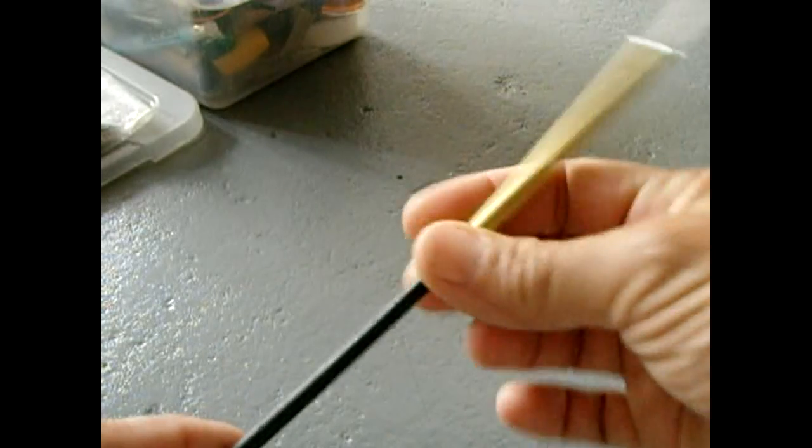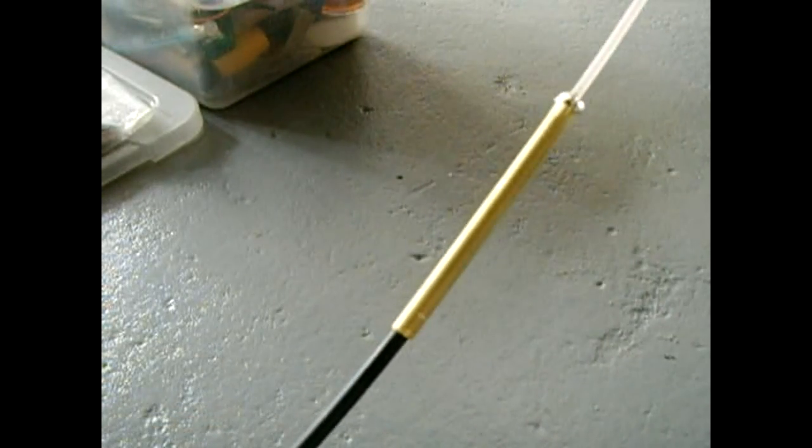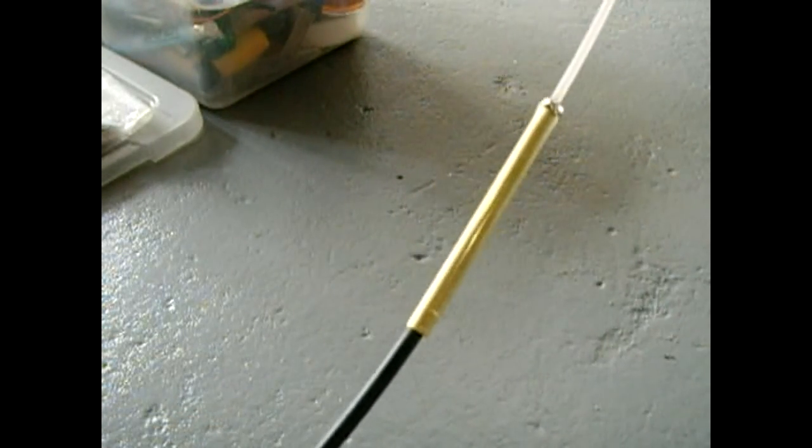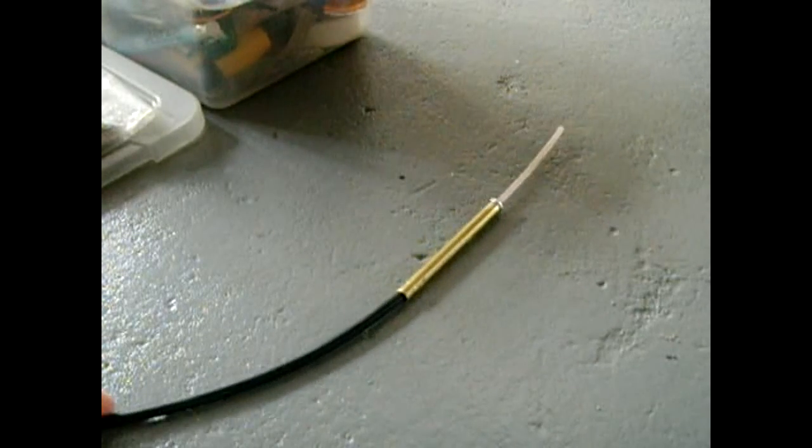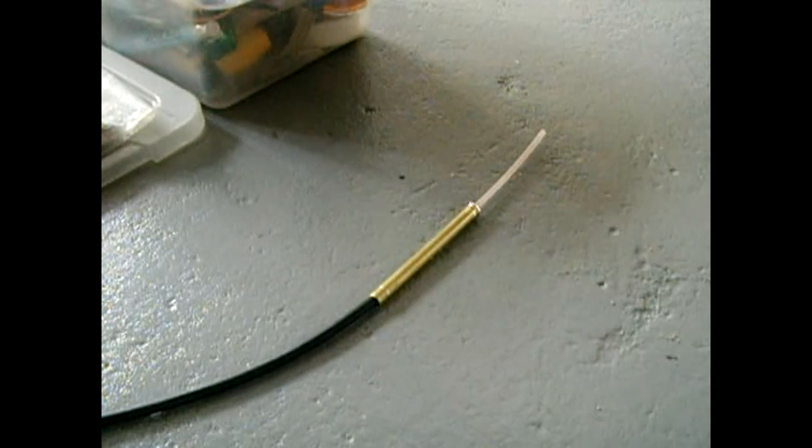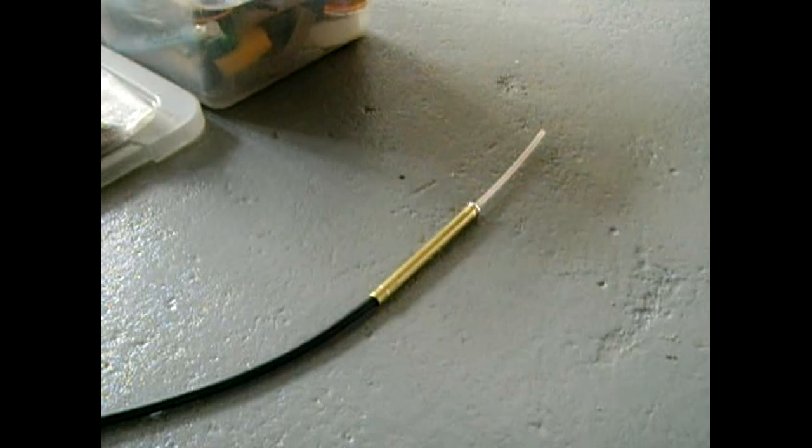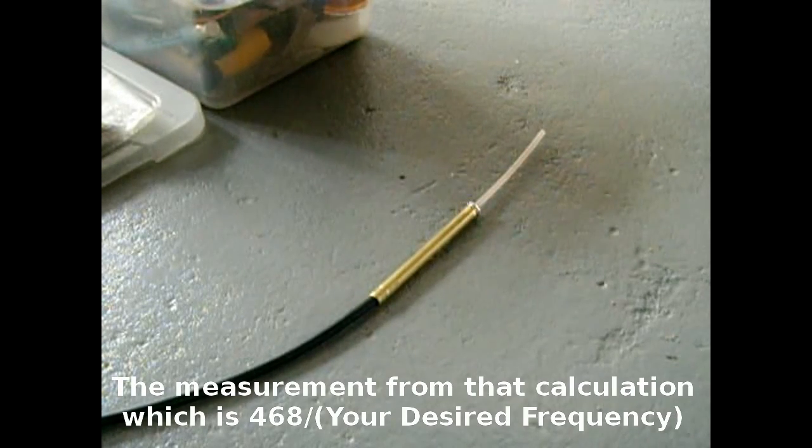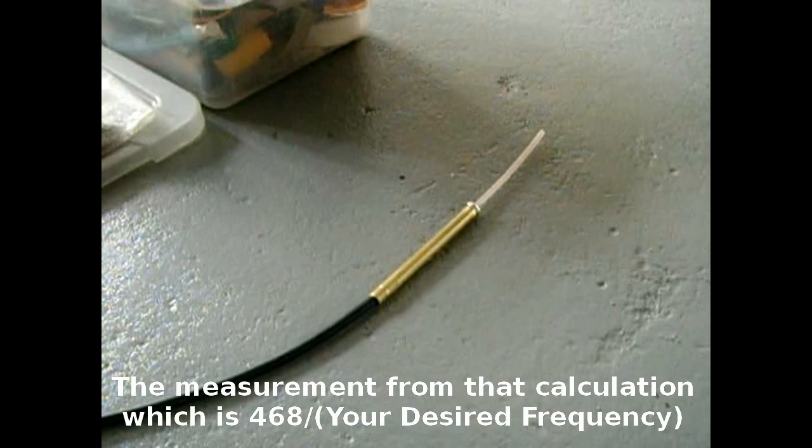Now how this antenna is made: you're going to take the half wavelength of the frequency that you're looking to make an antenna for, and that measurement will result in feet. So if it comes up with 0.5, then you know the half wavelength is six inches. Once you have that half wavelength measurement, you're going to divide that by two.